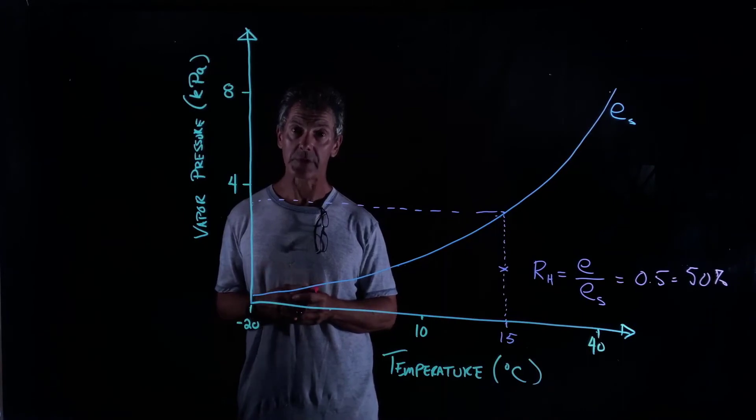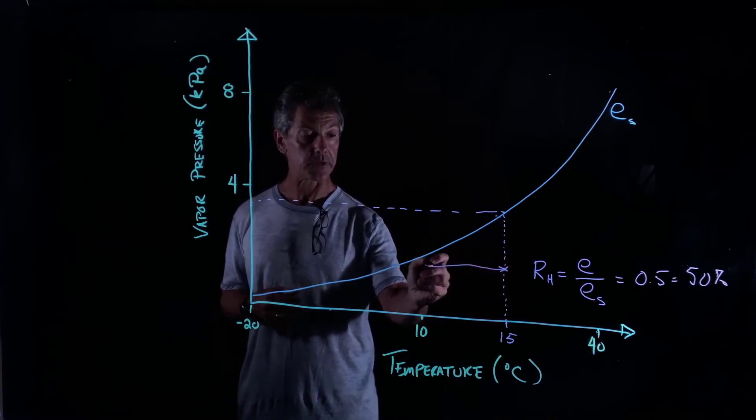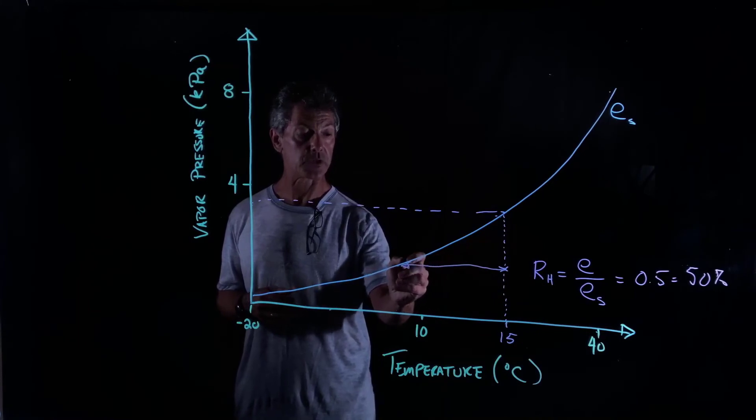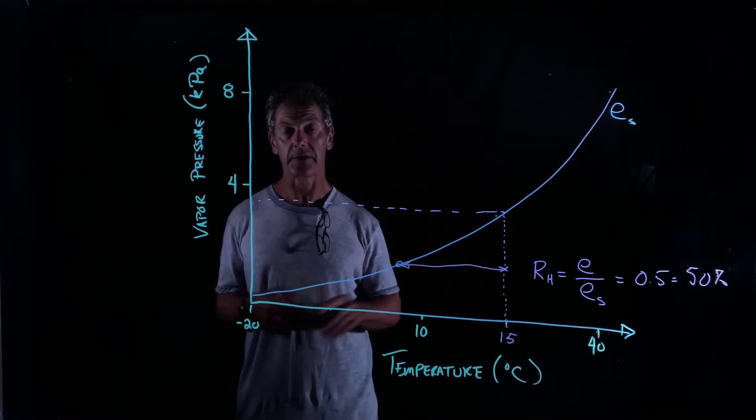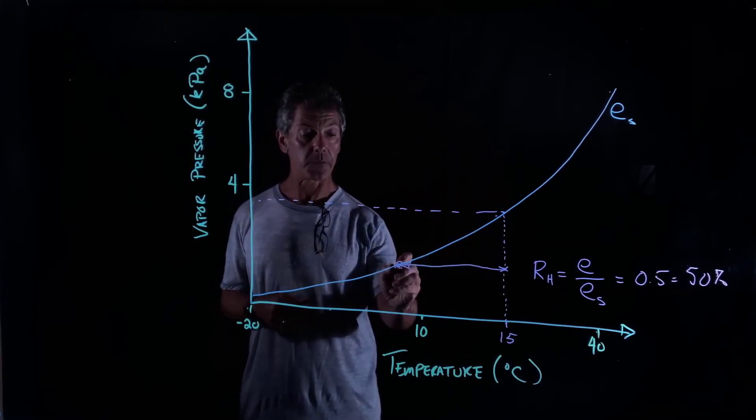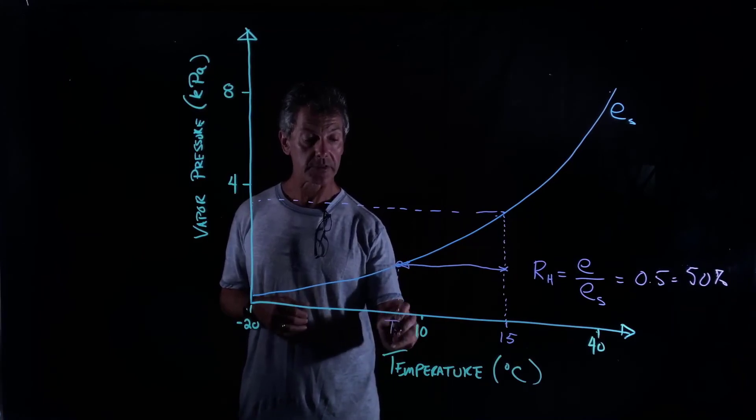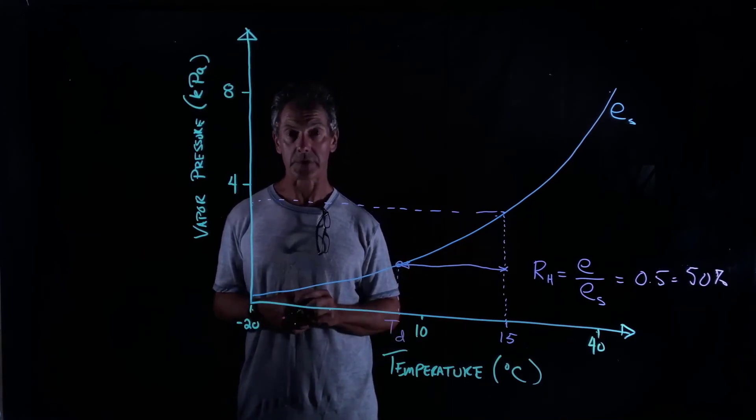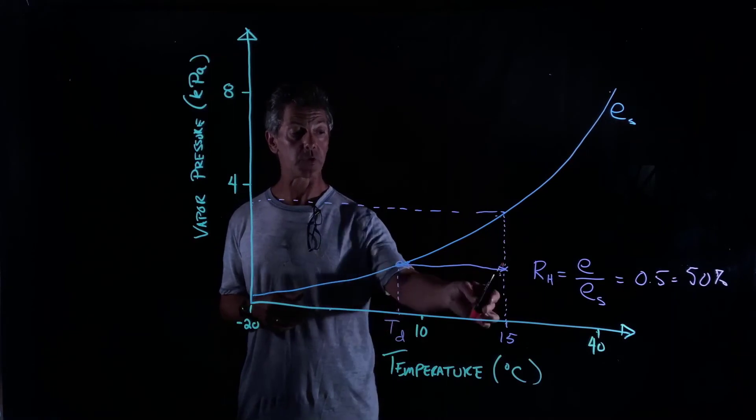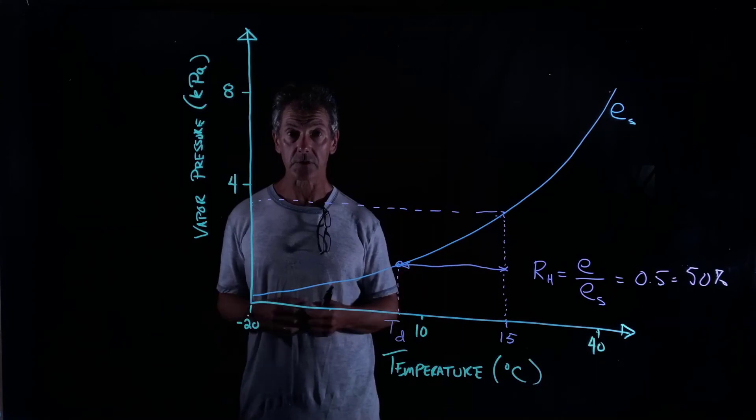What happens if we drop the temperature? If we drop the temperature, we're going to go in this direction. So we'll drop the temperature here, and at some point we're going to interact with that saturated vapor pressure again. And if we look down here, we're going to call this the dew point temperature. Why do we call that? Well, when you drop the temperature and we get to saturation conditions, we start to get dew point.